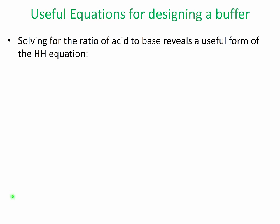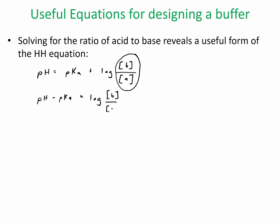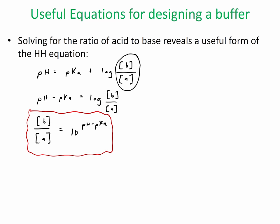I want to show a useful form of the Henderson-Hasselbalch equation for buffer problem solving. If we write out the Henderson-Hasselbalch equation, we get pH equals pKa plus the log of concentration of base over concentration of acid. If we move the pKa over and take the inverse log of both sides, we get: concentration of base over concentration of acid equals 10 to the (pH minus pKa). This is pretty useful for buffer design questions.